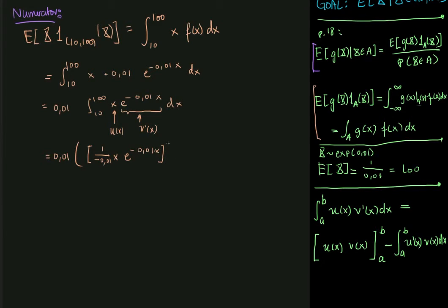And I evaluate this in 100 and evaluate it in 10 and subtract. And then I want to say minus the integral from 10 to 100 of u prime of x. So u of x was equal to x. So u prime of x is just equal to 1. So that won't need to be here, but I can just write it anyways.